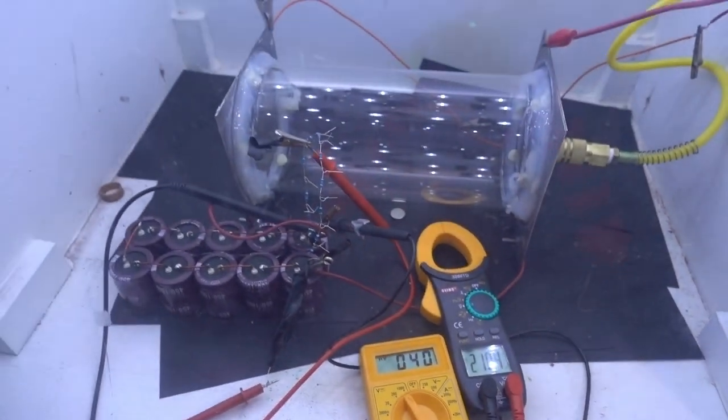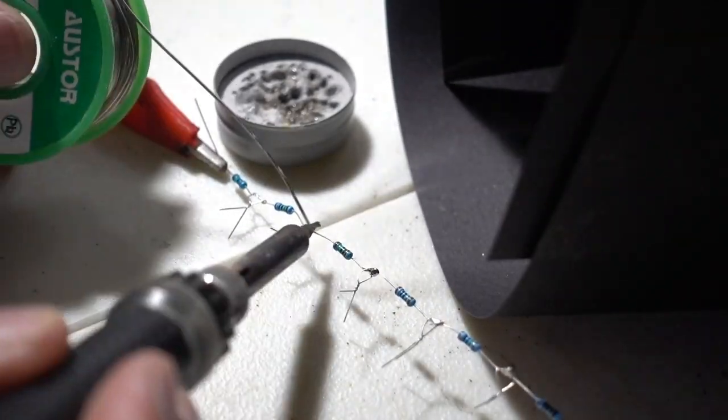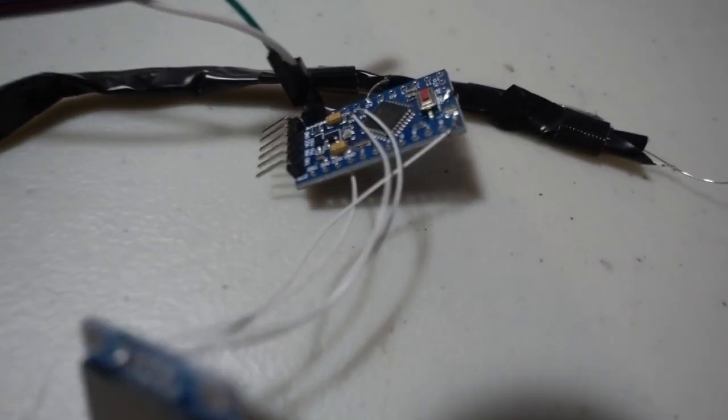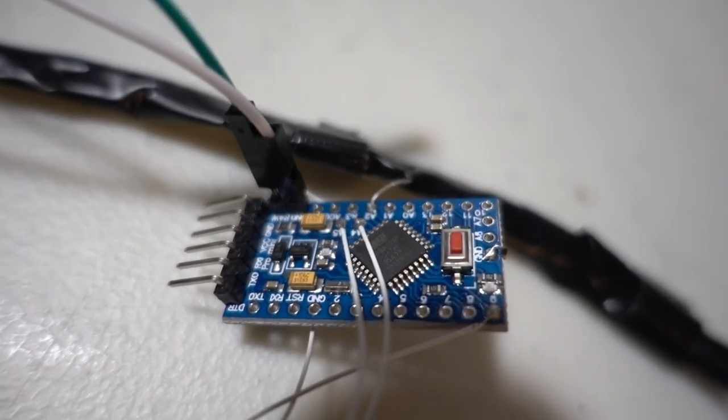Now everything looks good. I'm going to finalize it and solder everything together. I duct taped the crap out of my voltage divider. I put the voltage divider at A2 on the Arduino, and then A4 and A5 are going to be data and clock.